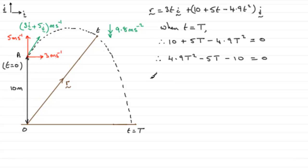And I'm going to use the quadratic formula, should be familiar with this: t equals minus b plus or minus square root of b² - 4ac all over 2a, where a is 4.9, b is minus 5, and c is minus 10.